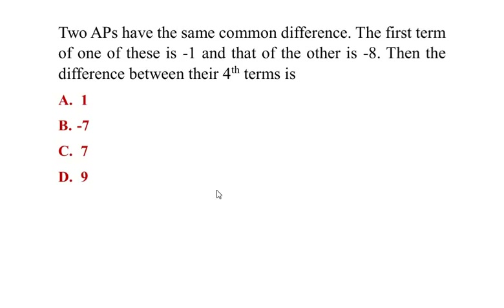Hello and welcome to my channel. In this video we are going to solve an example on arithmetic progression. Two arithmetic progressions have the same common difference. The first term of one of these is negative one and that of the other is negative eight. We need to find the difference between their fourth terms.